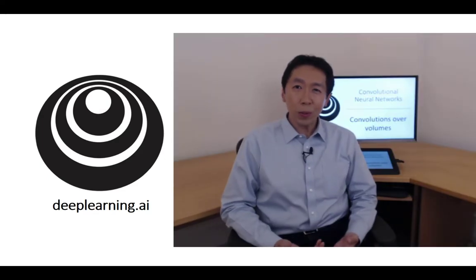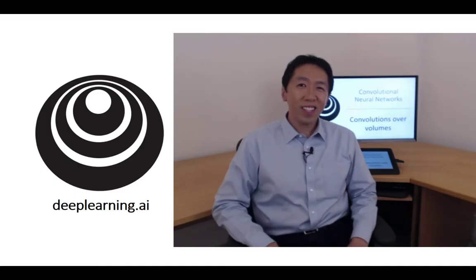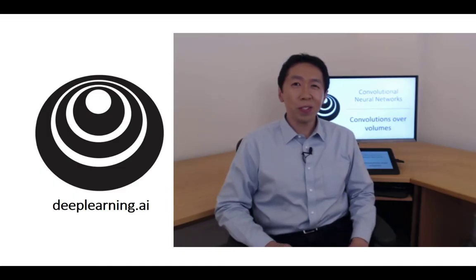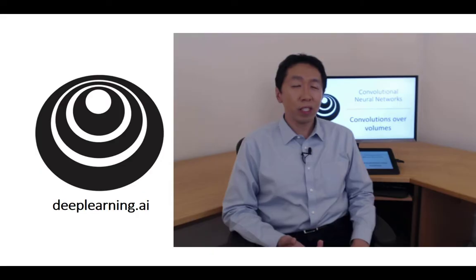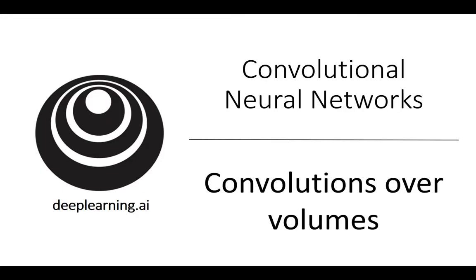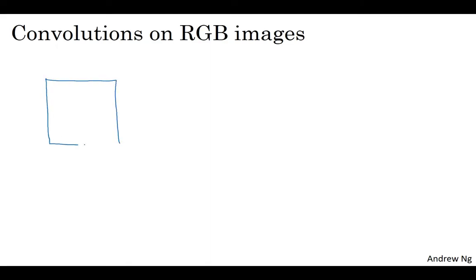You've seen how convolutions over 2D images work. Now let's see how you can implement convolutions over not just 2D images, but over three-dimensional volumes. Let's start with an example. Let's say you want to detect features not just in a grayscale image, but in an RGB image. An RGB image might be 6 by 6 by 3, where the 3 corresponds to the 3 color channels. You can think of this as a stack of three 6 by 6 images.